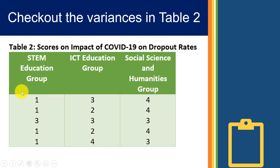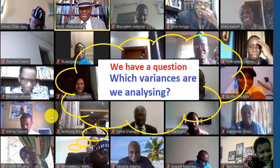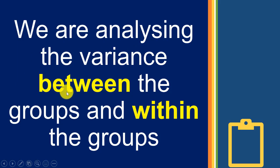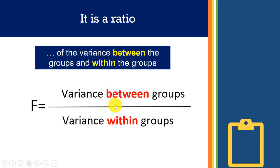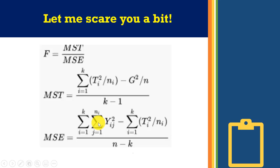Between the groups, variances can be quite diverse. So which variances are we analyzing? We are analyzing two variances: variances between the groups and variances within the groups. It's actually a ratio — and this ratio, named after Fisher who invented it, is called the F-ratio. It's simply the variance between groups divided by the variance within groups.